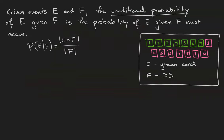Given two events E and F, the conditional probability of E given F is the probability that E occurs given that F must also occur. The probability of E given F is defined to be the cardinality of E intersect F divided by the cardinality of F. With our events and sample space as before,